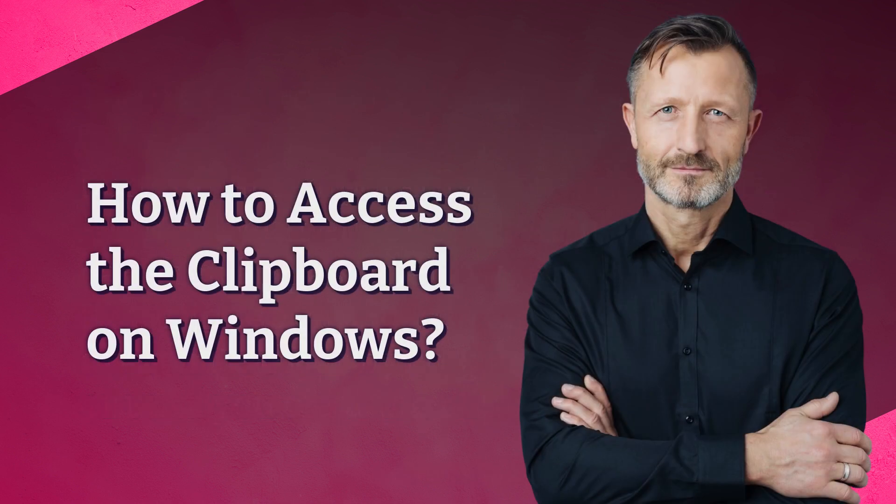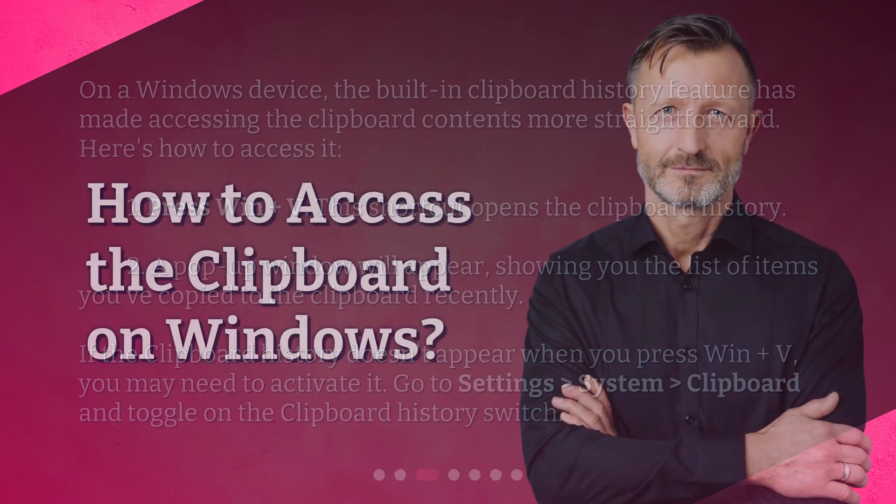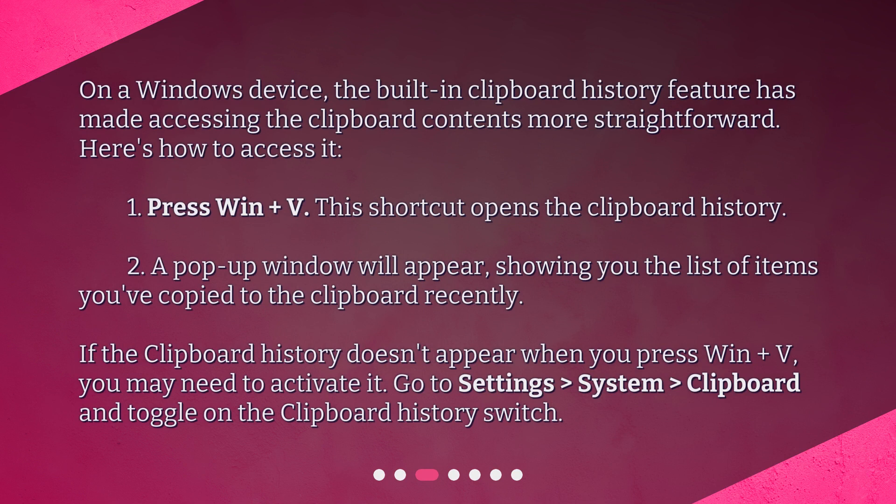On a Windows device, the built-in Clipboard History feature has made accessing the Clipboard contents more straightforward. Here's how to access it. First, press Win + V. This shortcut opens the Clipboard History.